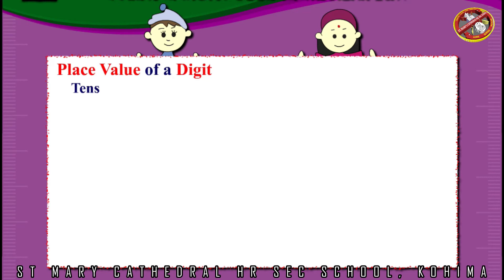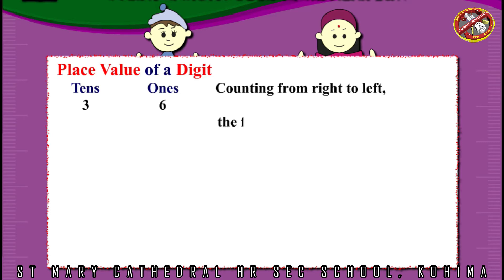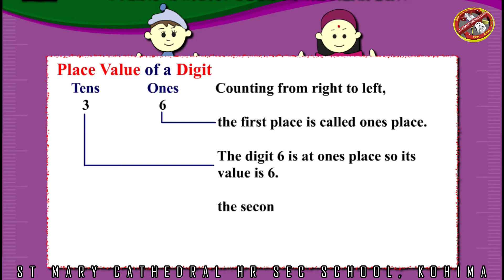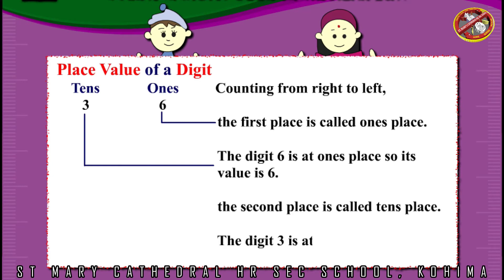Place value of a digit. Tens, ones: 3, 6. Counting from right to left, the first place is called ones place. The digit 6 is at ones place, so its value is 6. The second place is called tens place. The digit 3 is at tens place, so its value is 30.